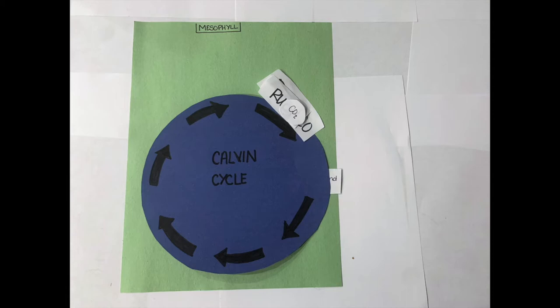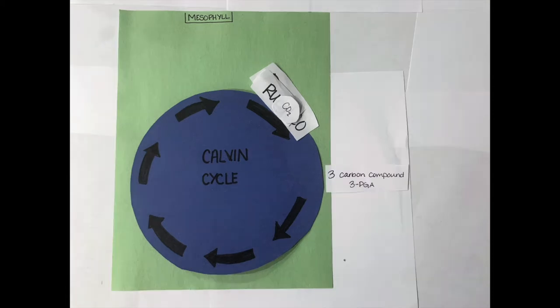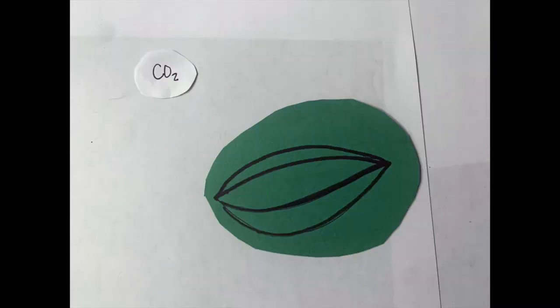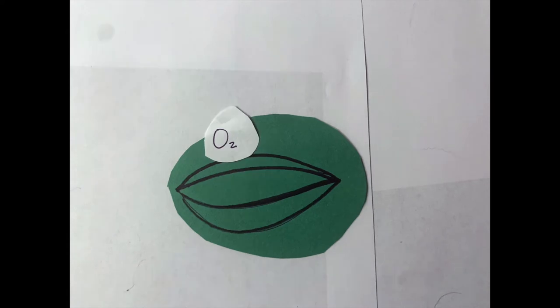The first organic compound produced from this interaction is the 3-carbon compound 3PGA and is where the name C3 comes from. In normal C3 photosynthesis conditions, the stomata are open, thus allowing carbon dioxide to move in and oxygen to move out.